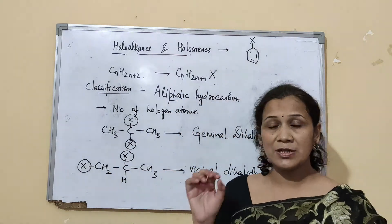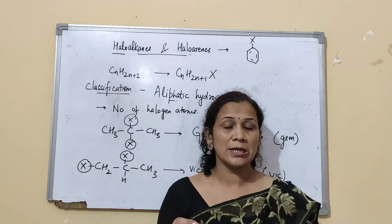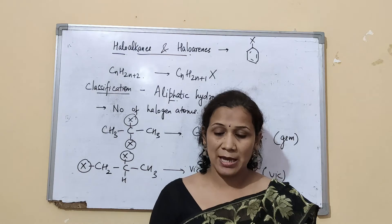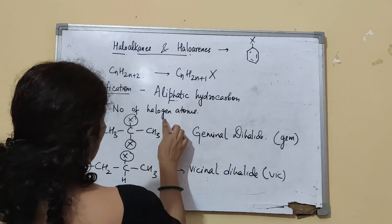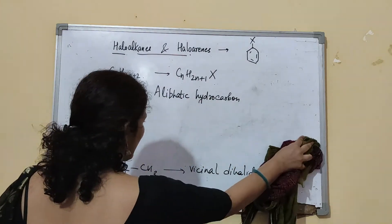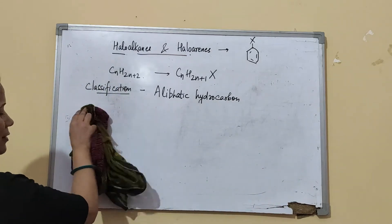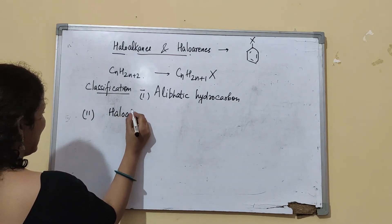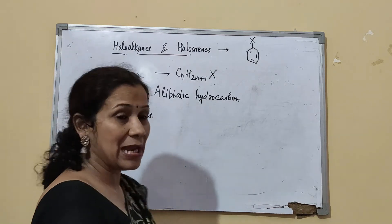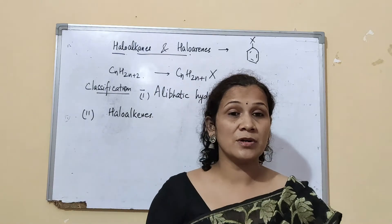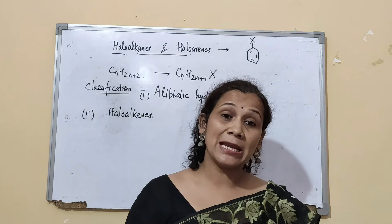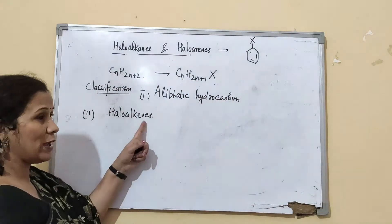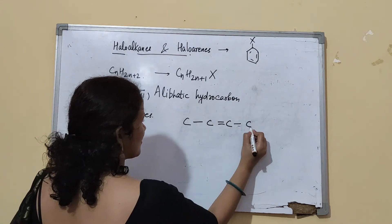If you have a double bond in the chain and a halogen attached, we call it a haloalkene — the word 'alkene' tells you there is a double bond. The word 'alkane' means a straight chain with all single bonds, 'alkene' means a double bond somewhere, and 'alkyne' means a triple bond. So for a haloalkene, there is both a double bond and a halogen atom in the compound.